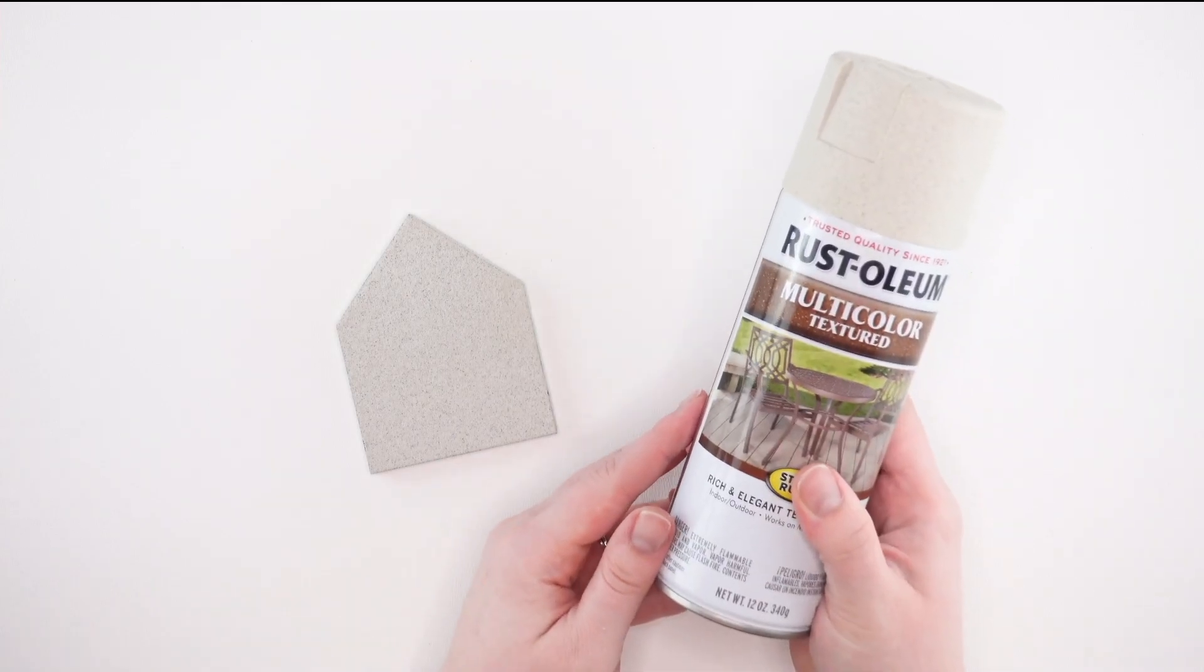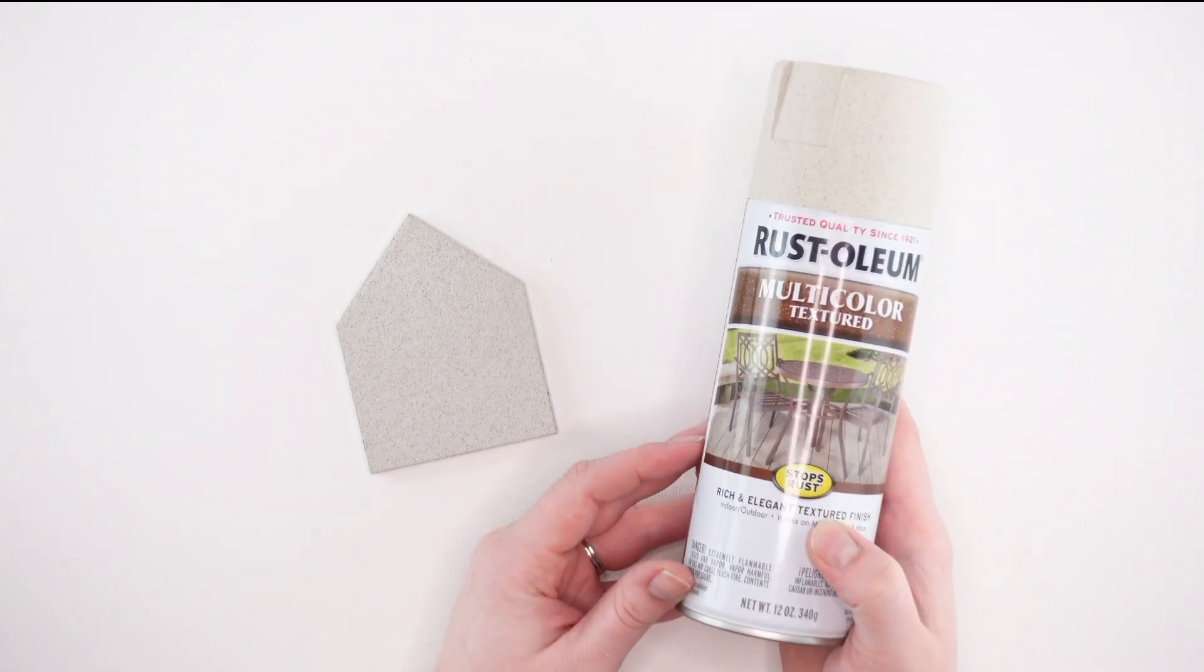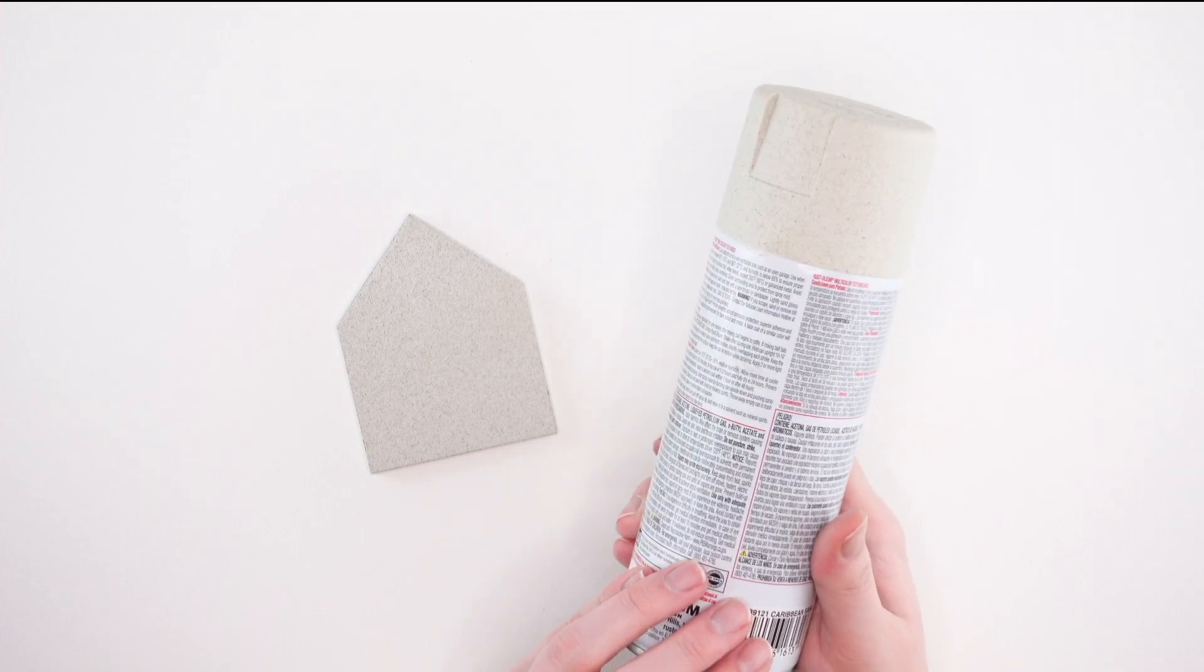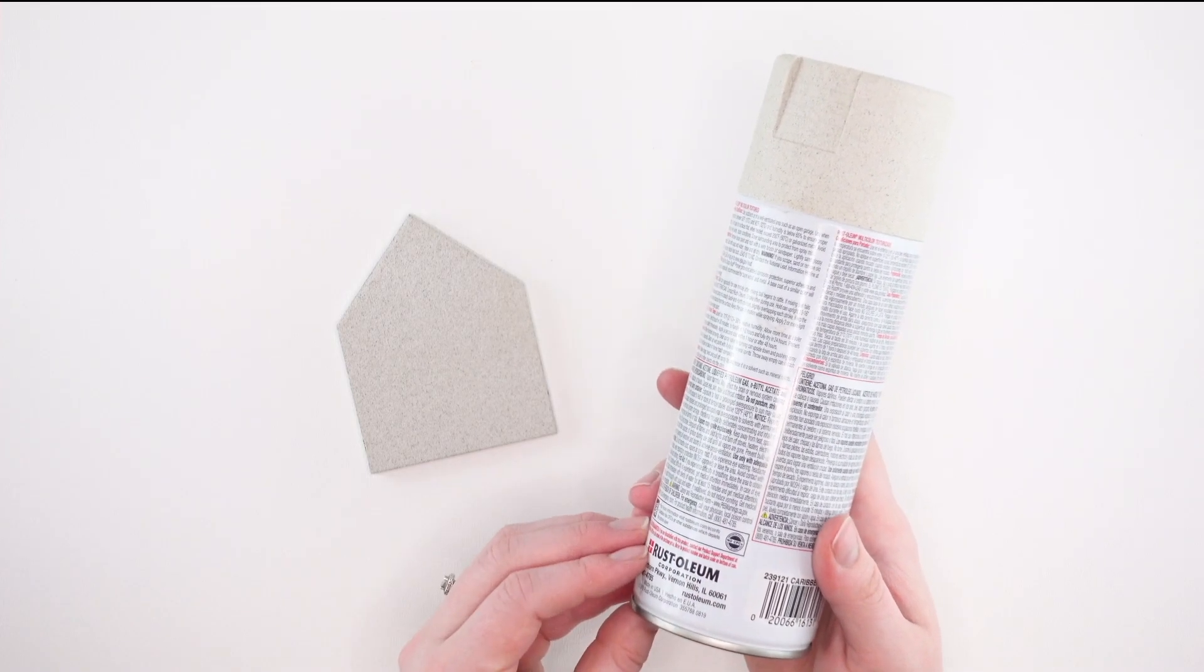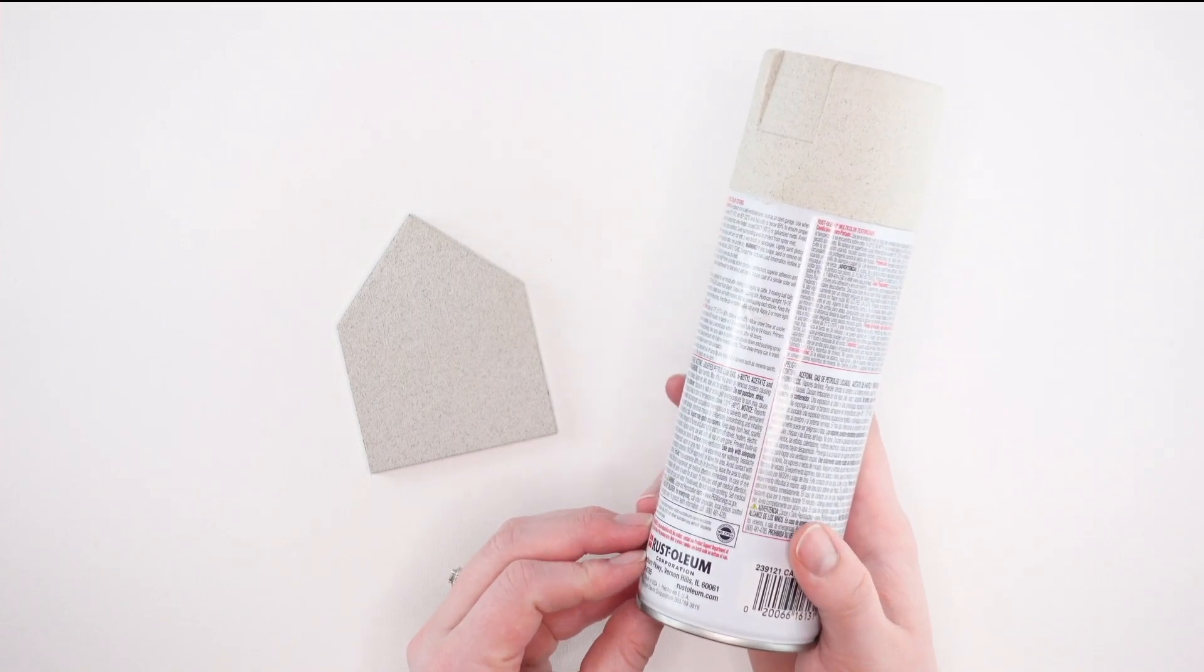Another option for paint is spray paint. This is great if you want to very quickly cover a lot of little pieces or if you want a specialty finish. Make sure to spray paint in a very well ventilated space or outdoors and refer to the information on the spray can.